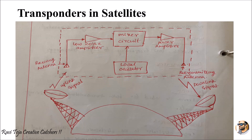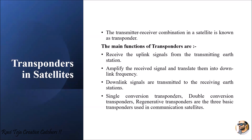A transponder is a system that contains a transmitting and receiving unit with a mixer circuit or local oscillator to achieve the desired frequency. It takes the uplink signal from the earth station, amplifies it to the desired frequency using a mixer circuit and local oscillator, and retransmits it back to the earth station as the downlink signal. There are several types of transponders: single conversion transponders, double conversion transponders, and regenerative transponders — these are the most widely used basic transponders in satellite communications.